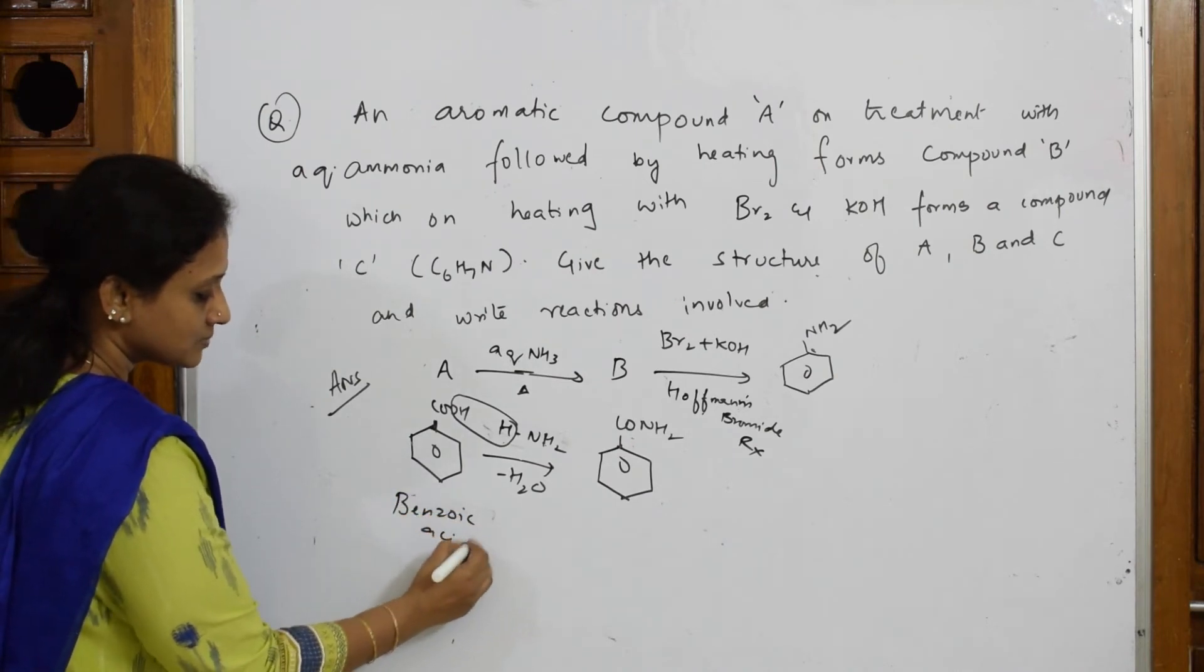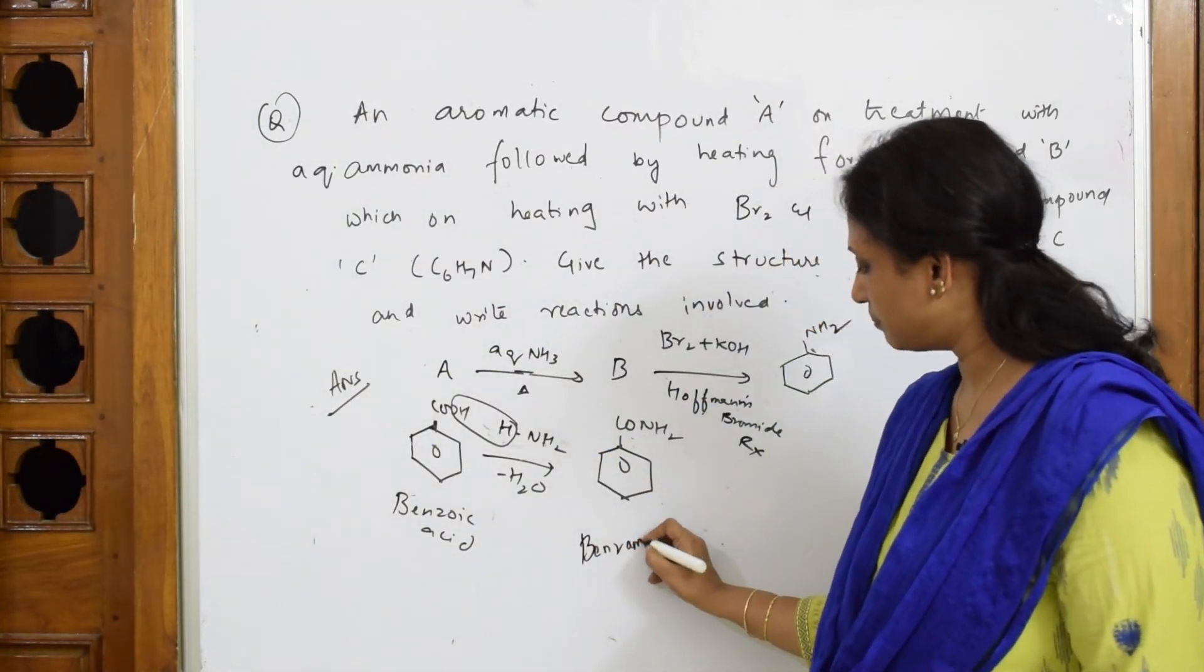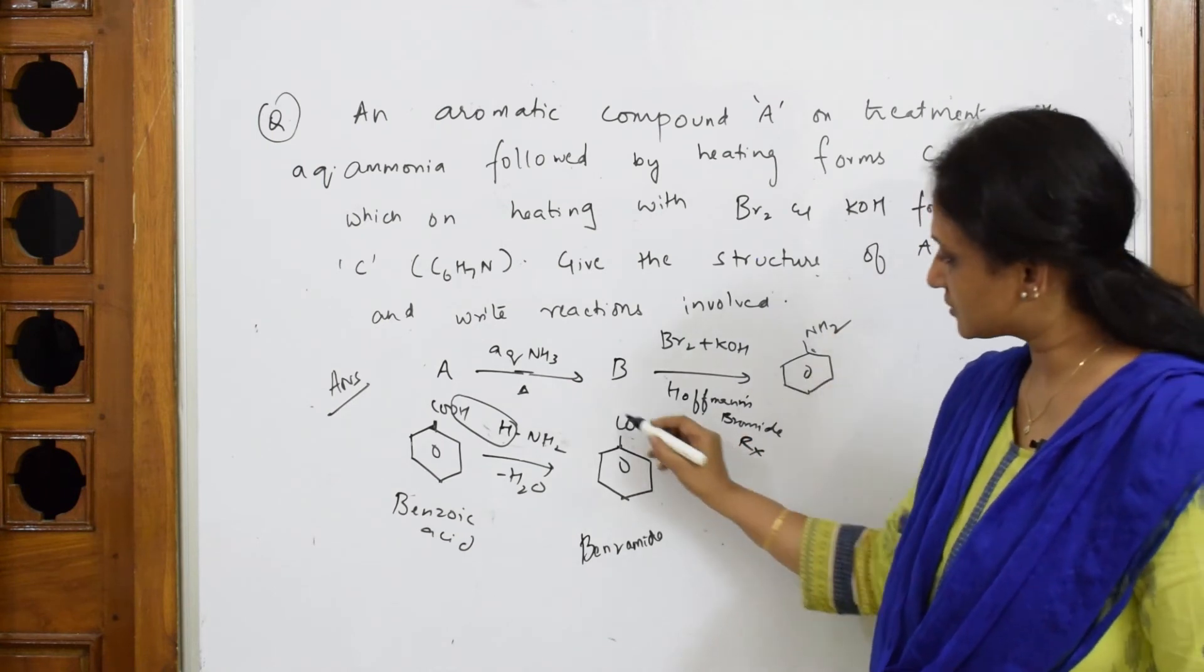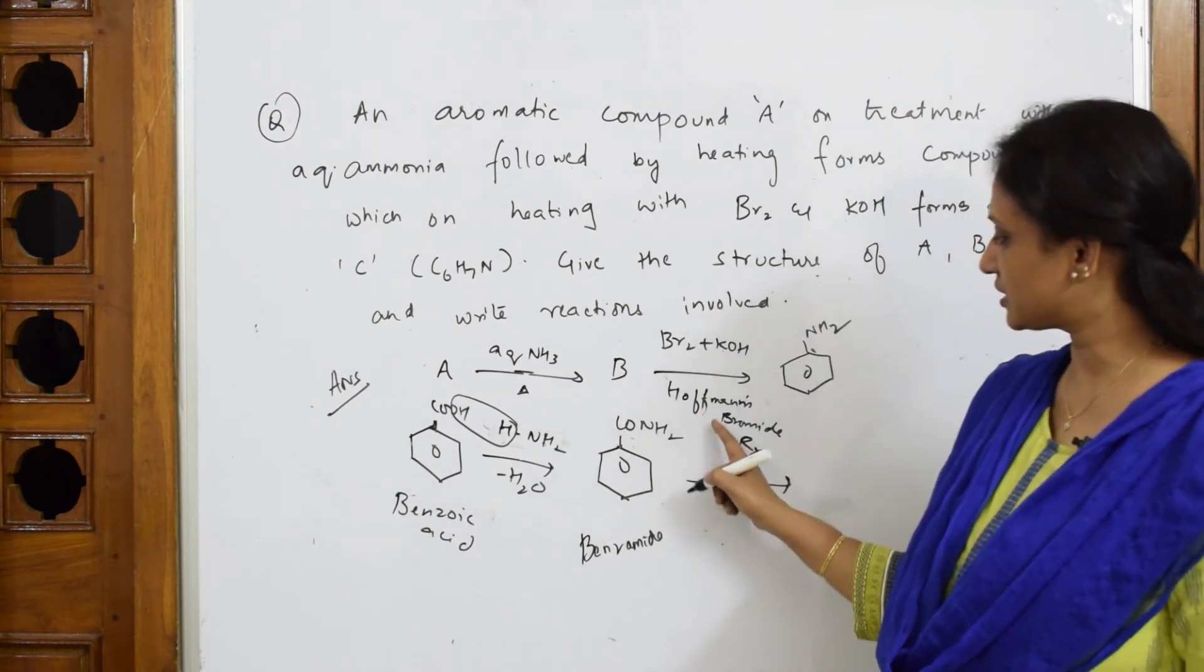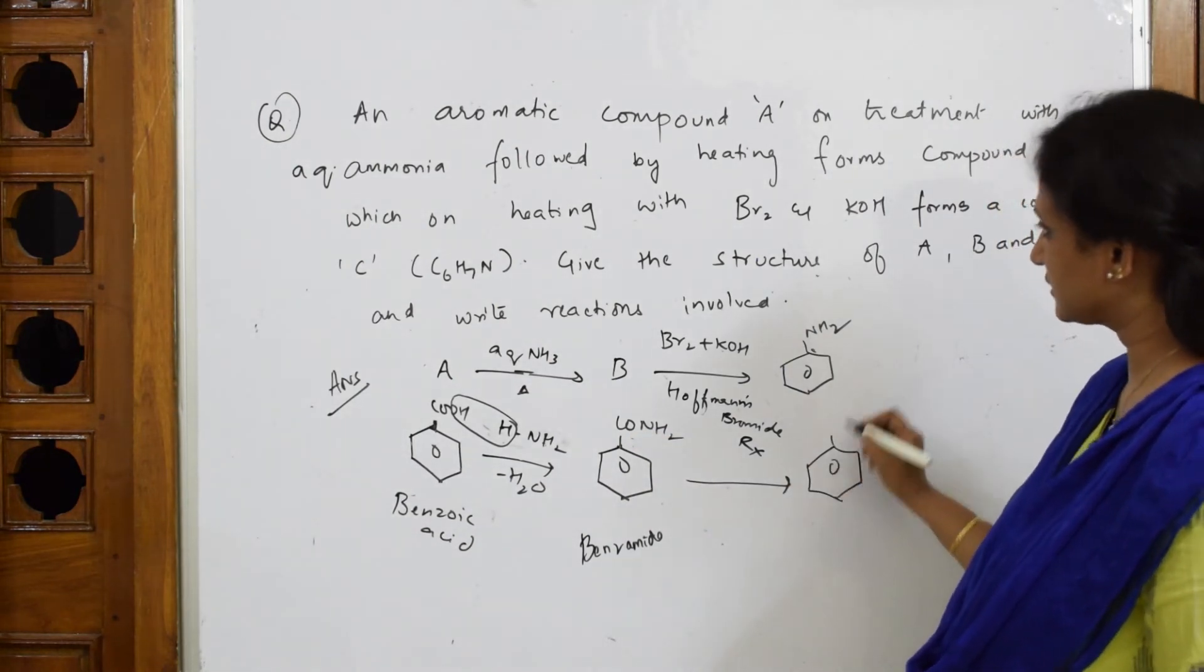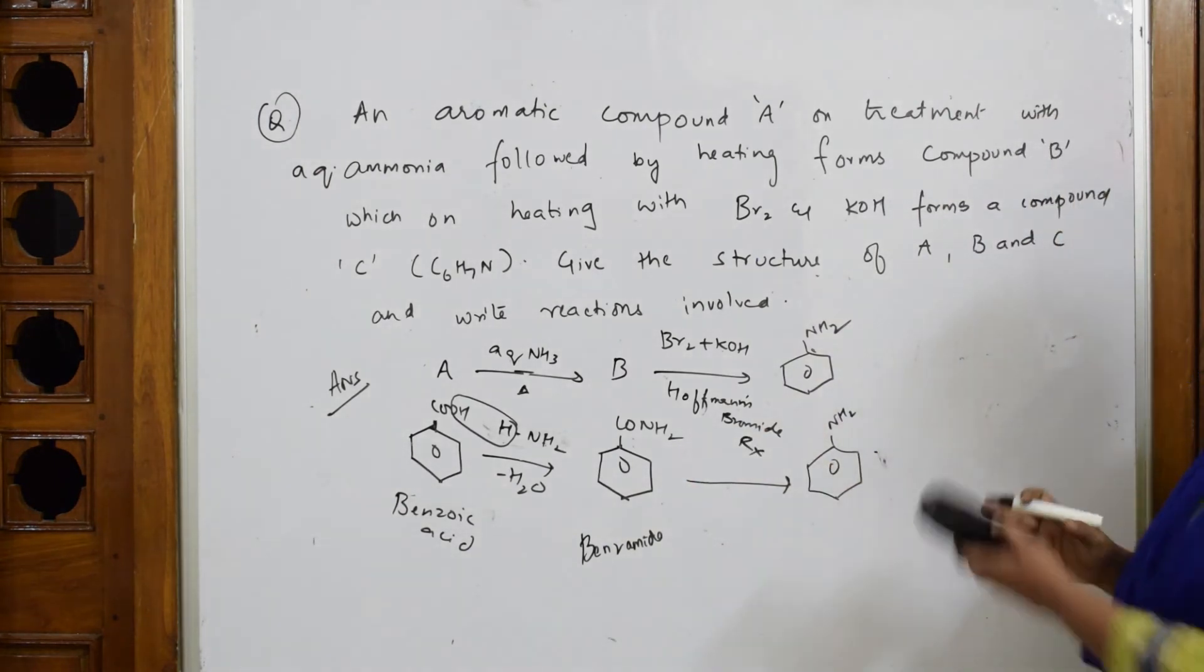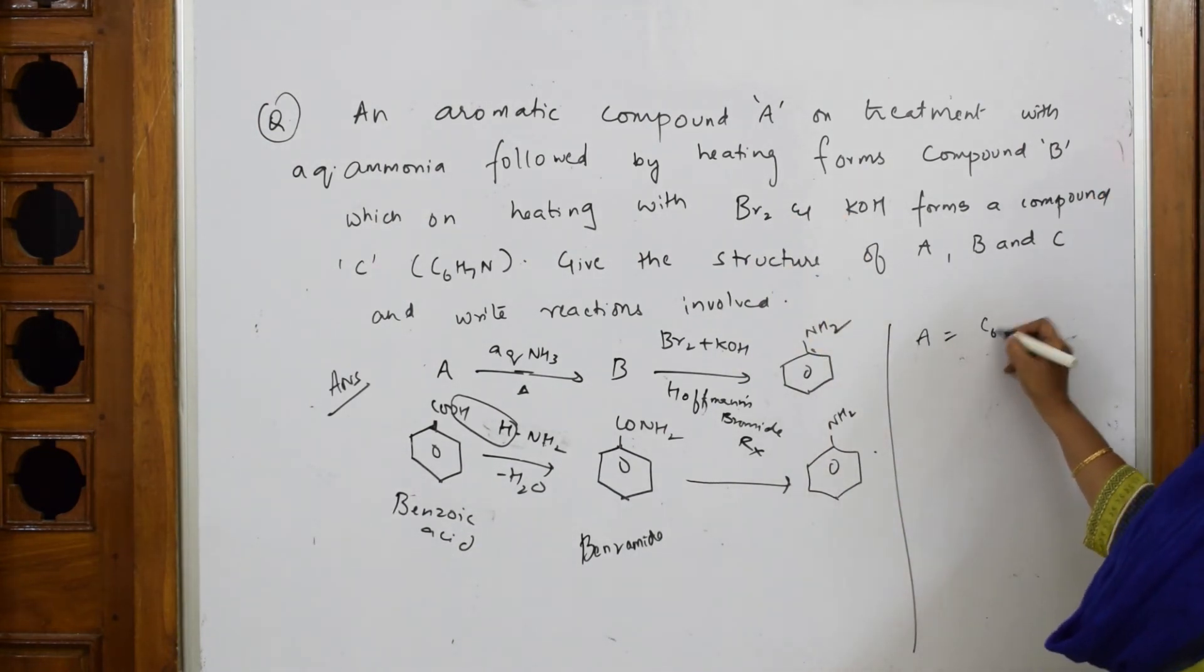Benzoic acid in the presence of ammonia is forming benzamide. Benzamide with Hoffmann bromamide reaction - I said this one carbon less is lost with potassium carbonate. Watch that Hoffmann bromamide reaction, you'll understand. One carbon less you get C6H7N, that is aniline. Apart from that, it's going to be potassium carbonate, potassium bromide. So what did I get? A is benzoic acid, B is benzamide, C is aniline.